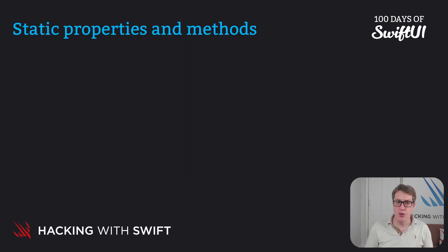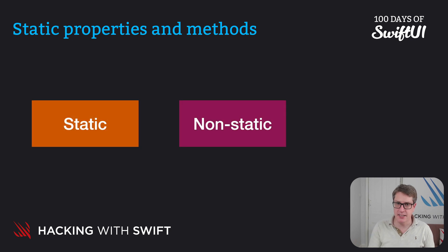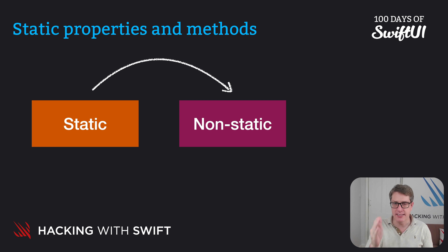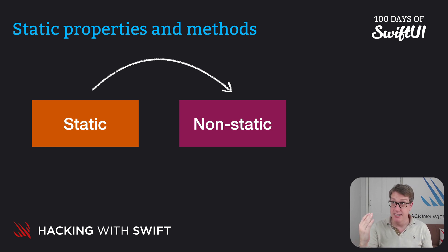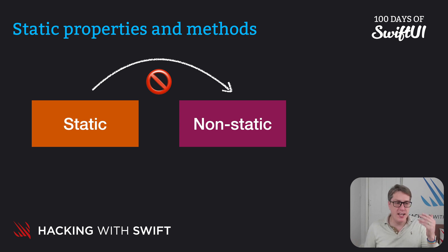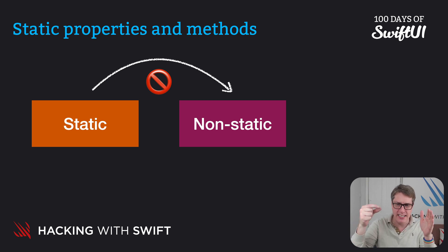Now, if you want to mix and match static and non-static properties and methods, there are two rules. First, if you want to access non-static stuff — regular properties, regular methods — from static stuff, like static properties and static methods, you can't. It is not possible. It doesn't make sense: you're in the school struct calling add student, and how could you possibly refer to an exact instance of school? Which one would you refer to? There's no way of saying 'I mean that instance over there.'